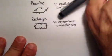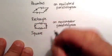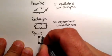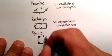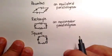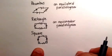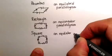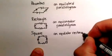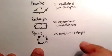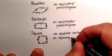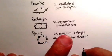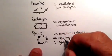Finally, let's look at a square. We're all pretty familiar with a square. How would you define it? A square is an equilateral rectangle. But it's also an equiangular rhombus. And it's also a regular quadrilateral — remember the word regular — where everything is equal.